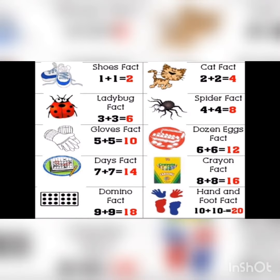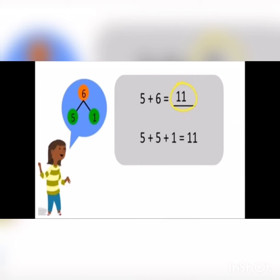One plus one equals two, two plus two equals four, three plus three equals six, four plus four equals eight, five plus five equals ten, and so on. Let's have a look at the first example: five